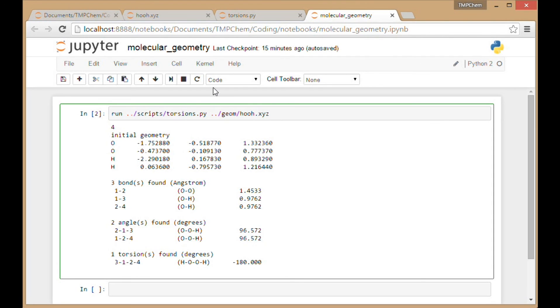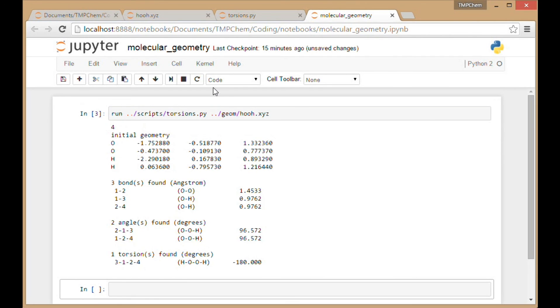So there's the initial geometry repeated. There are three bonds at those lengths in angstroms. Two angles with those atoms at 96.57 degrees. And we have our one torsion angle, which is minus 180 degrees, which is in agreement with what we saw earlier calculated by Avogadro. Thank you.